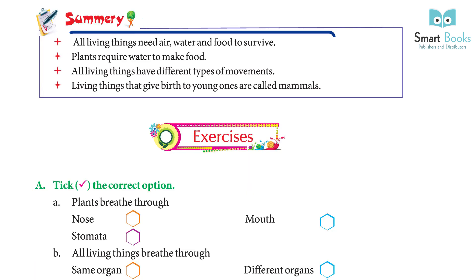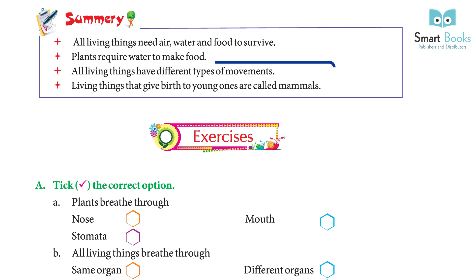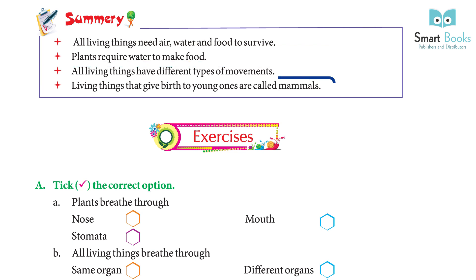All living things need air, water, and food to survive. Plants require water to make food. All living things have different types of movements. Living things that give birth to young ones are called mammals.